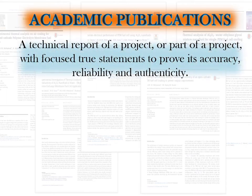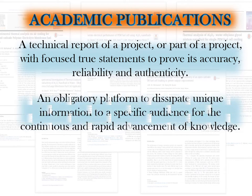An academic publication is actually a technical report of a project, or just part of a project, where the technical report focuses on true statements to prove that the contents are accurate, reliable and authentic. It is quite different from industrial reports because for academic publications we need to provide proof in many aspects such as scientific statements, mathematical formulations and many other proofs so that it can be accepted as true. It is obligatory for all of you because the world needs this information.